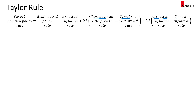The real neutral policy rate is the rate that will be targeted if growth were expected to be at trend and inflation is on target. So in other words, if the difference in these two brackets equals zero, then we will only have the first two terms. And if you take the real neutral policy rate plus the expected inflation rate, then this would be the nominal neutral policy rate.